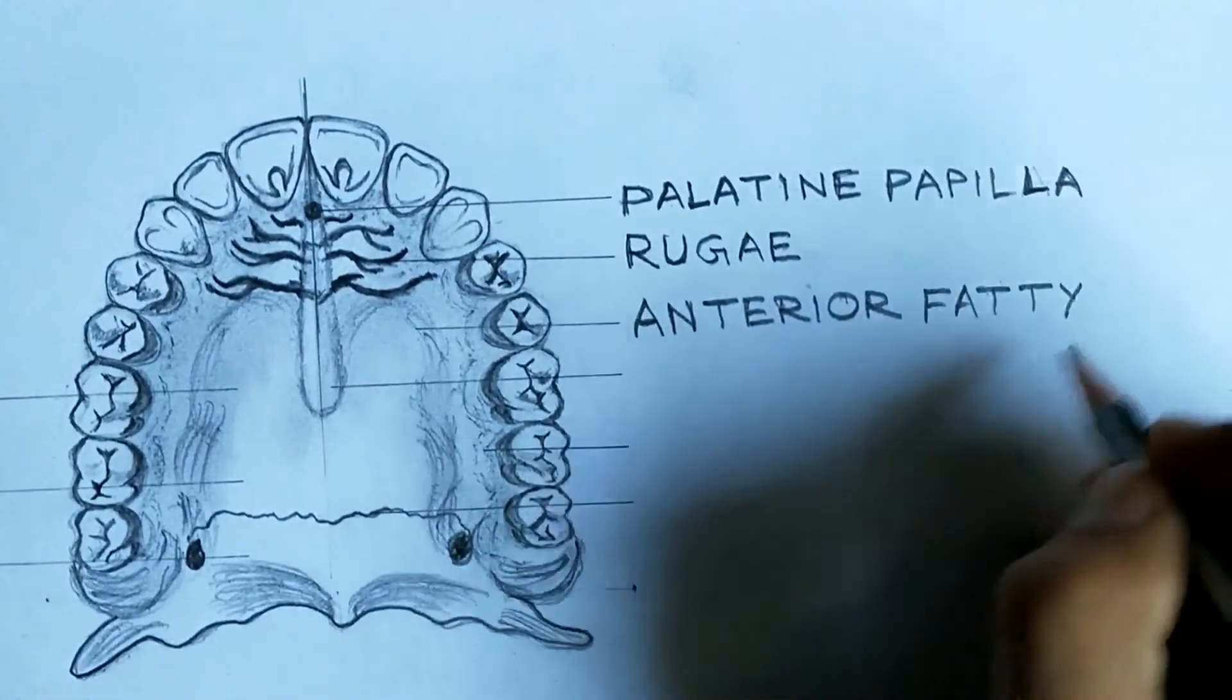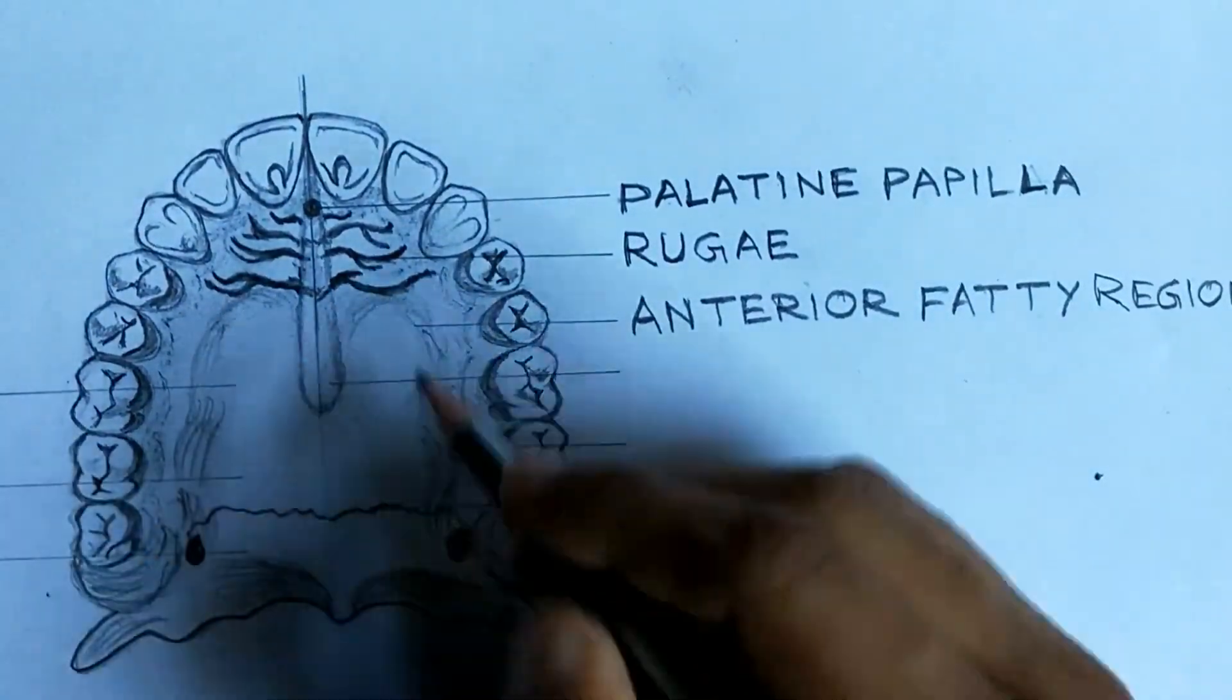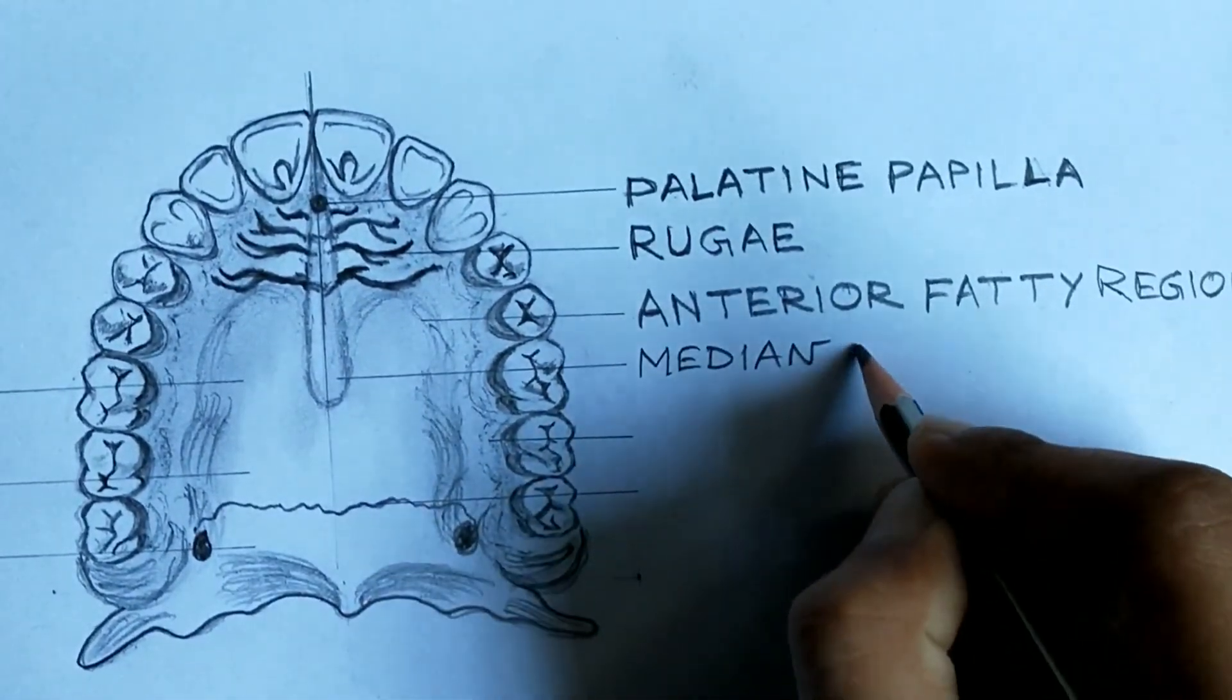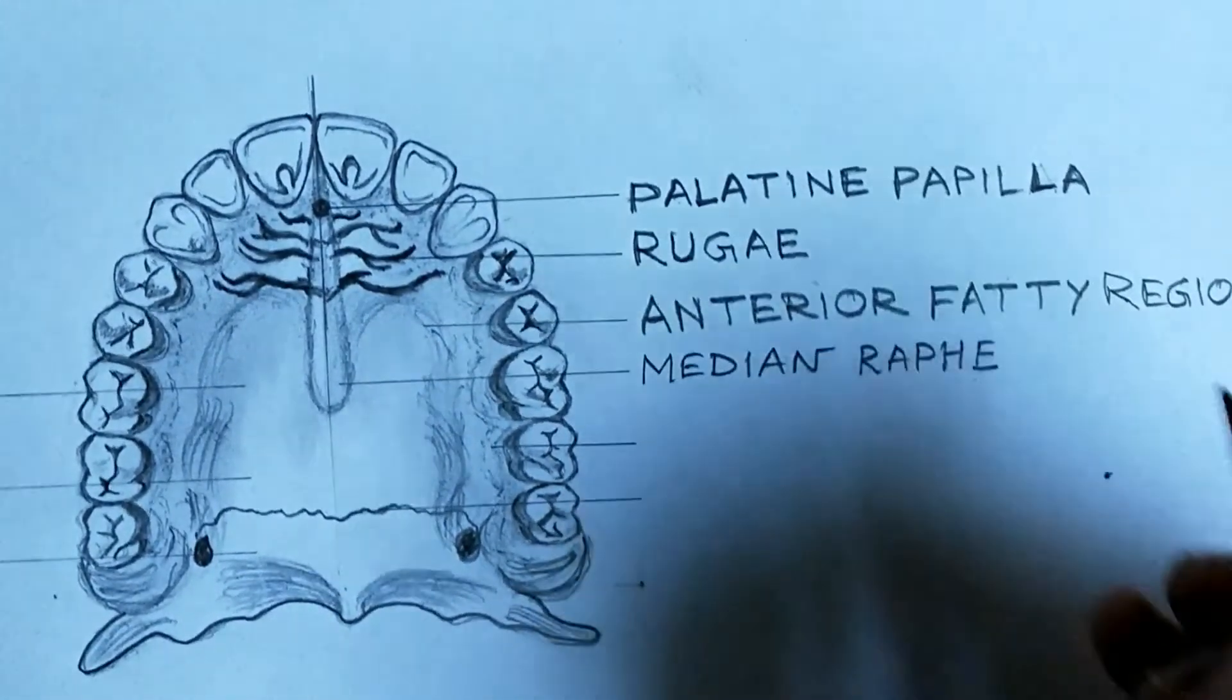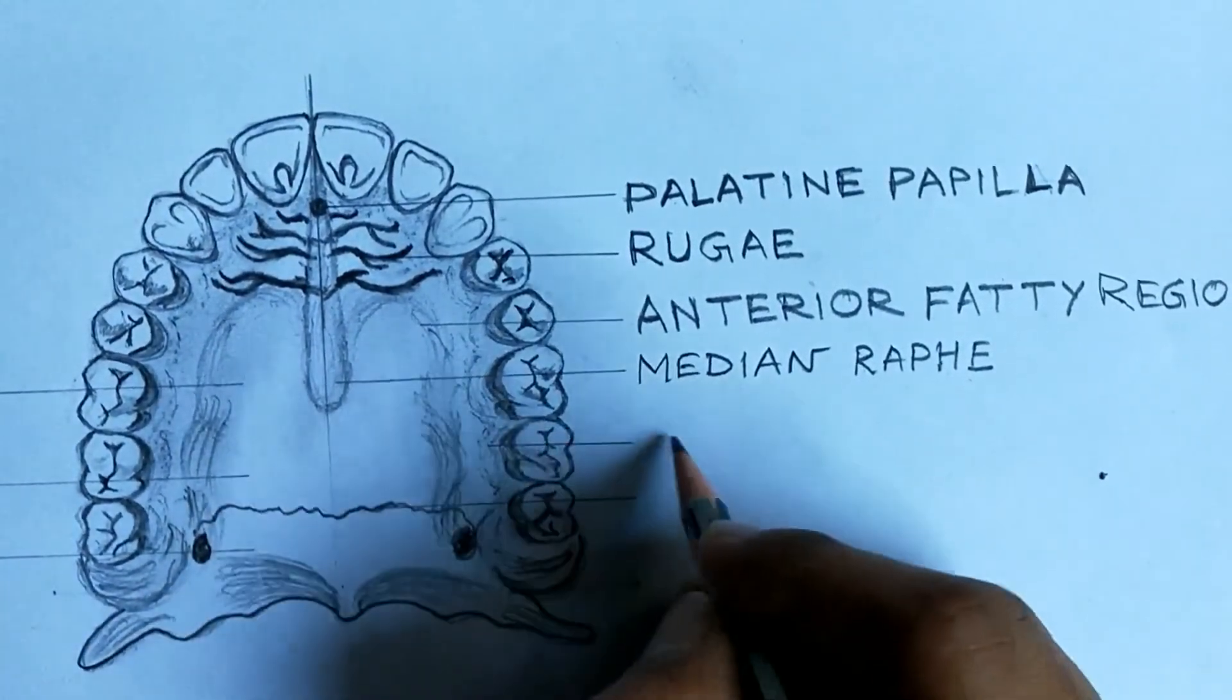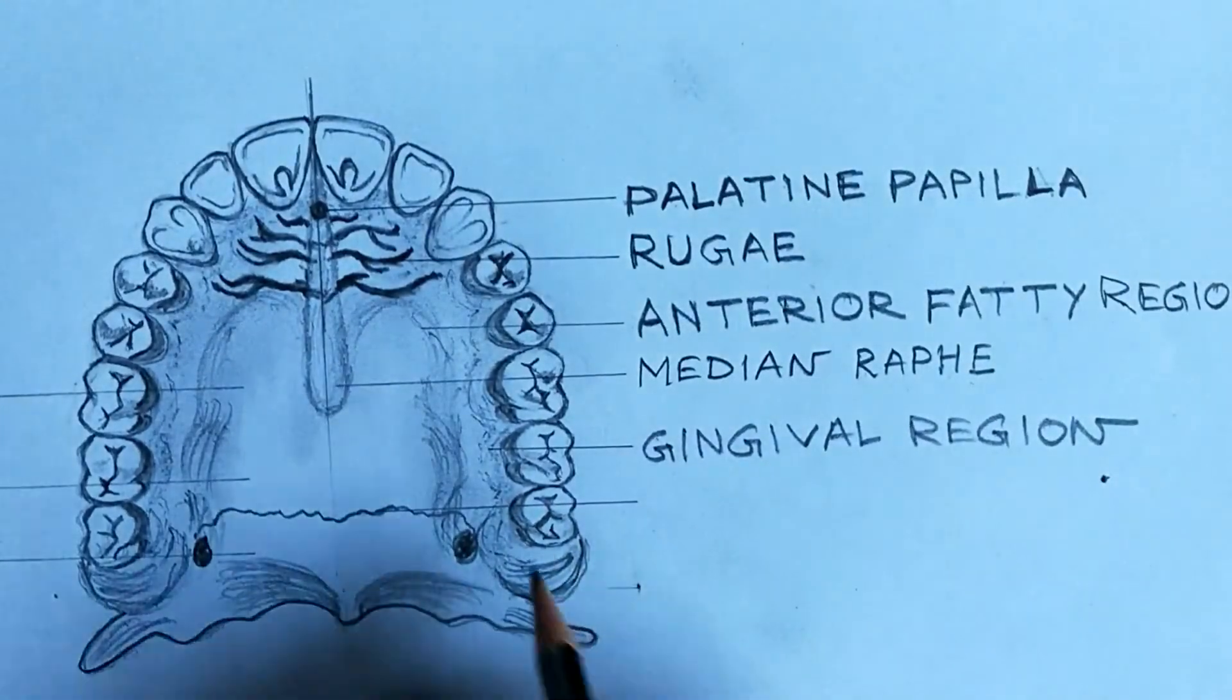Next, here's the anterior fatty region. This portion we call anterior fatty region, both sides of raphe. Next, median raphe. This marked area is the median raphe.